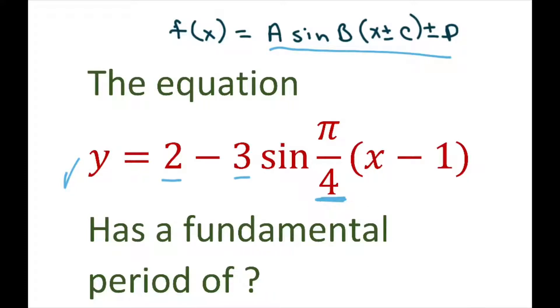So basically, all we're going to do for the period is take 2π over B. Well, our B in this case is π/4, so this is a fairly easy problem.